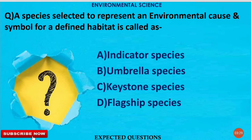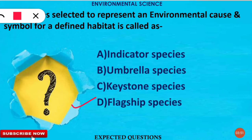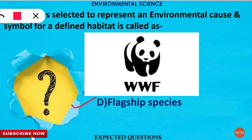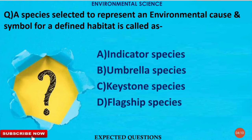The next question is: a species selected to represent an environmental cause and symbol for a defined habitat is called what? The correct option is D — flag species. Flag species are selected to represent an environmental cause or symbol for a defined habitat. For example, the WWF logo features a panda as the flag species for conservation of nature and wildlife.